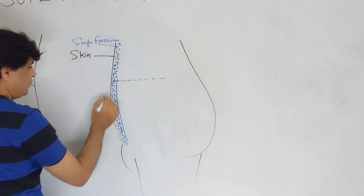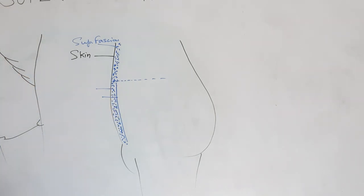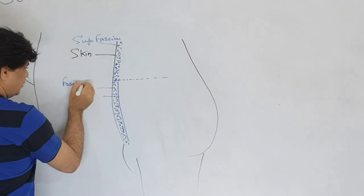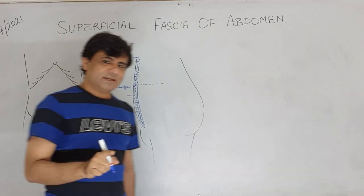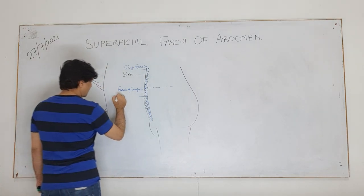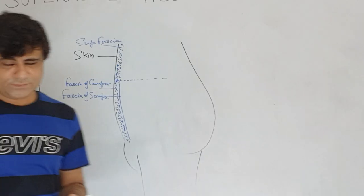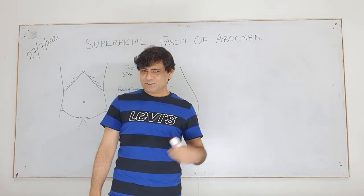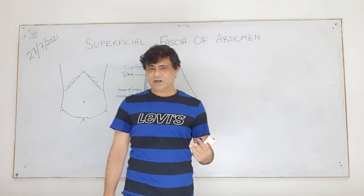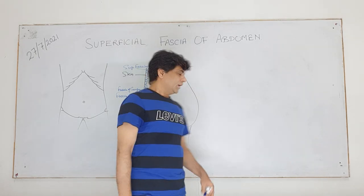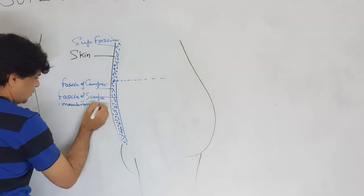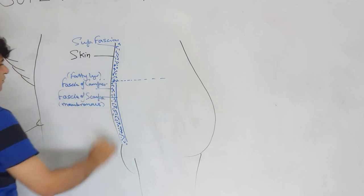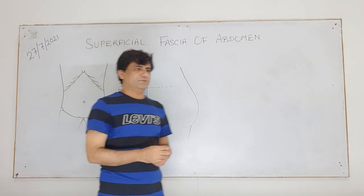Below the level of the umbilicus, the superficial fascia is modified into two layers. The superficial thick fatty layer is called fascia of Camper, and the deeper membranous layer of superficial fascia is called fascia of Scarpa. C comes before S, so remember - fascia of Camper is superficial and fascia of Scarpa is deep. Fascia of Scarpa is a membranous layer; fascia of Camper is fatty.